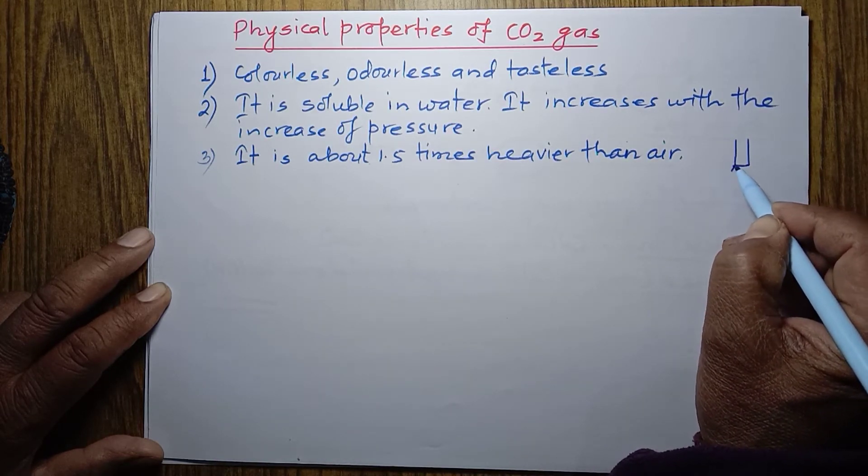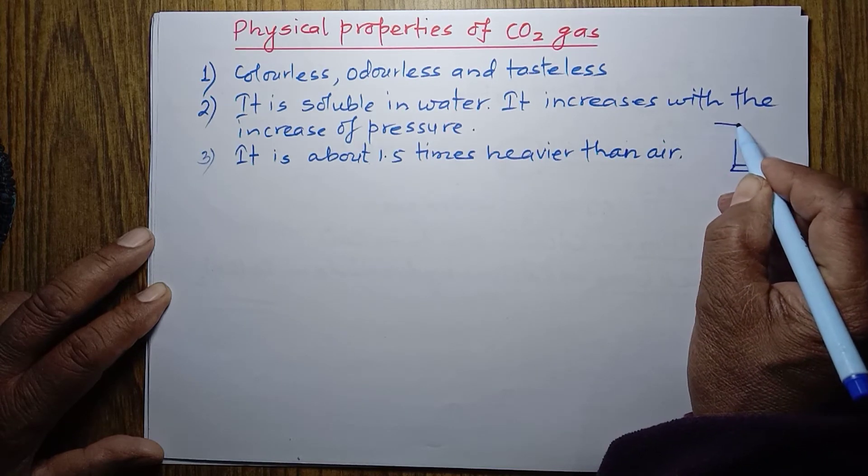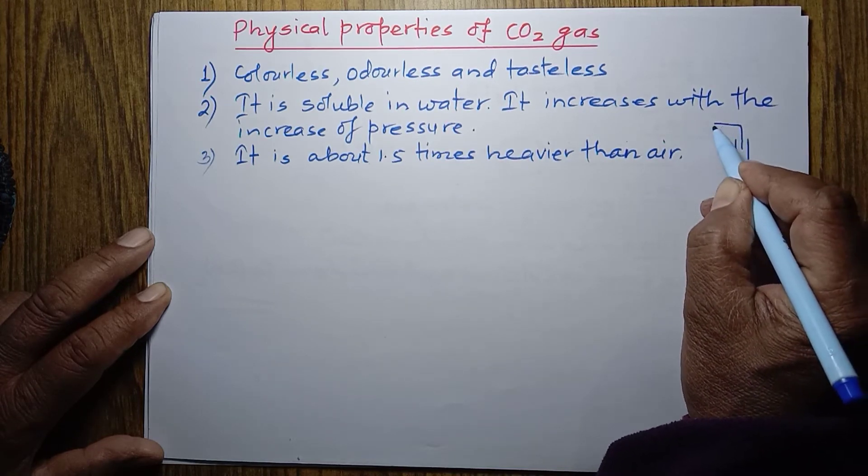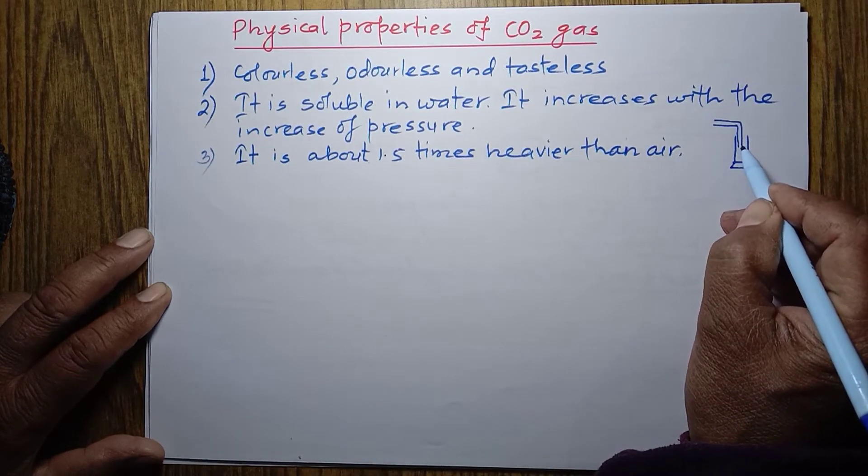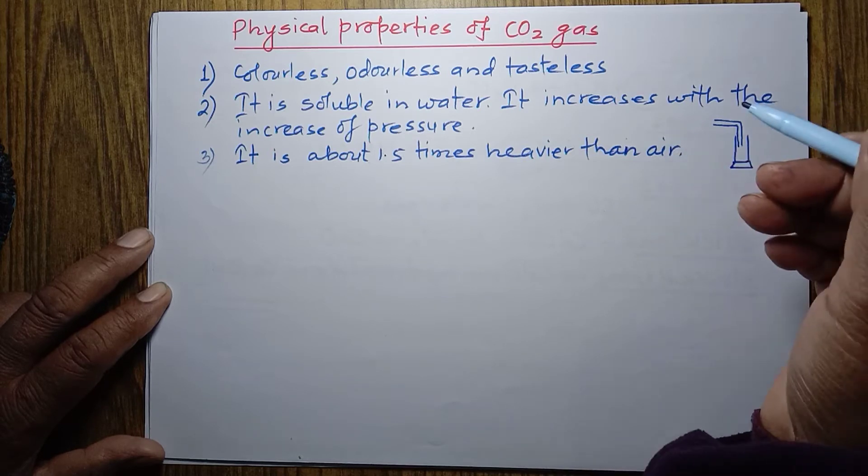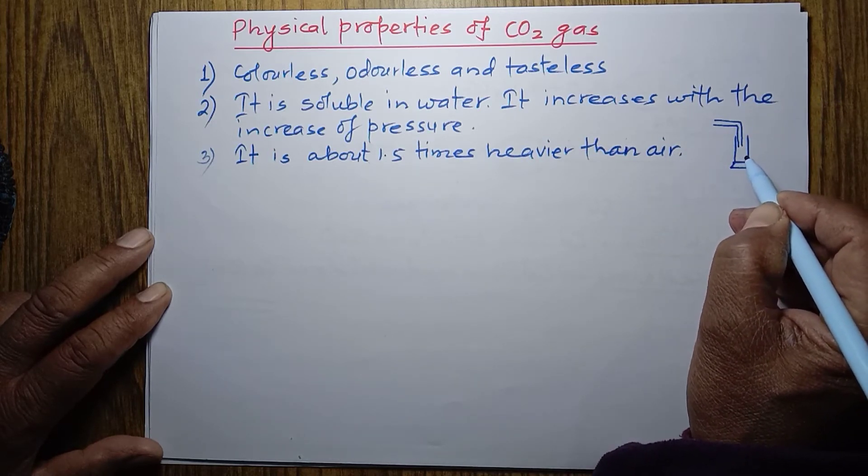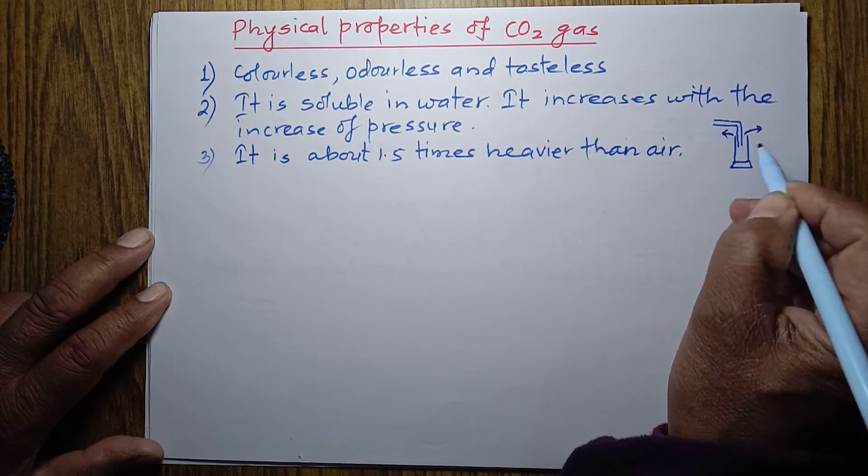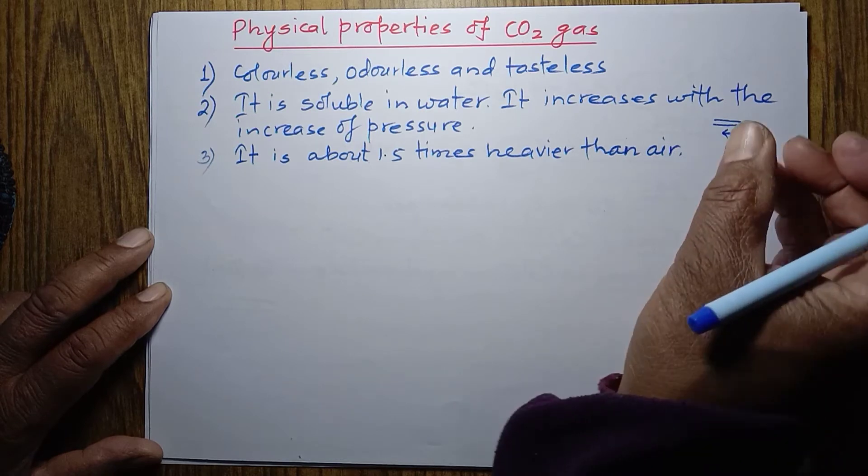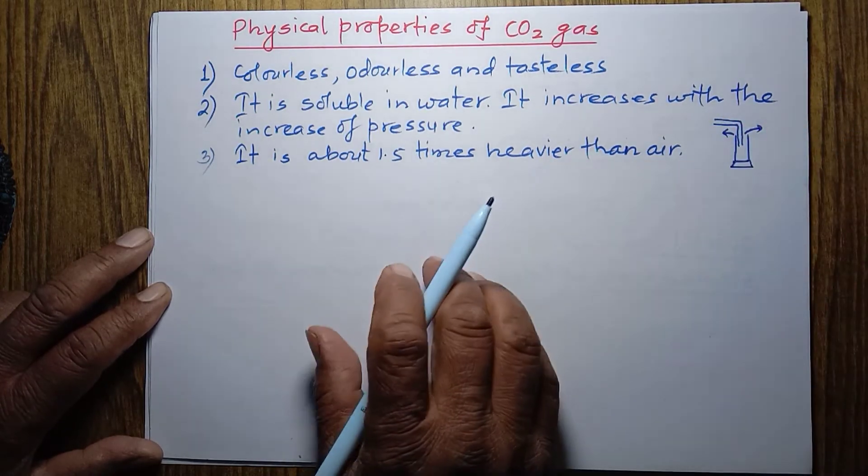If we have an erect gas jar and carbon dioxide is delivered through a delivery tube into this erect gas jar, then the carbon dioxide gas is heavier than air. It goes down and air contained in the gas jar is displaced outside. This way, we can collect carbon dioxide in an erect gas jar because it is heavier than air.